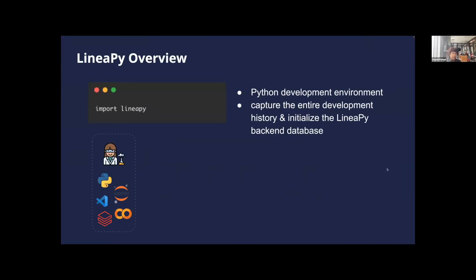Here are some details on what goes under the hood. The first step is to call import LinearPy. LinearPy is a Python library you import into your development environment, which can be anything ranging from a Jupyter notebook, VS Code, Databricks notebook, Google Colab, or just a plain Python script. The import statement at the top automatically starts a tracking mechanism which captures your entire development history and initializes the LinearPy backend database.